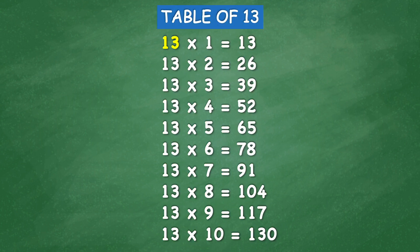Table of 13: 13 times 1 equals 13, 13 times 2 equals 26, 13 times 3 equals 39, 13 times 4 equals 52, 13 times 5 equals 65, 13 times 6 equals 78, 13 times 7 equals 91, 13 times 8 equals 104, 13 times 9 equals 117, 13 times 10 equals 130.